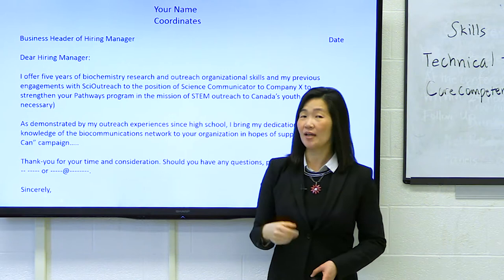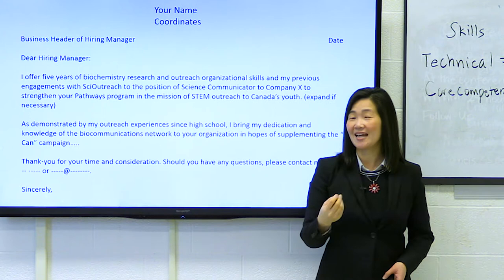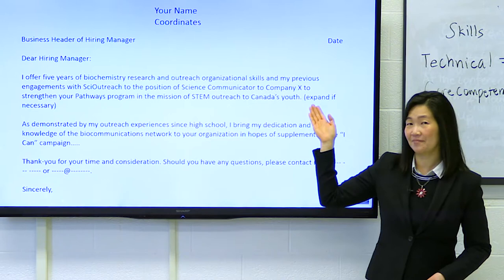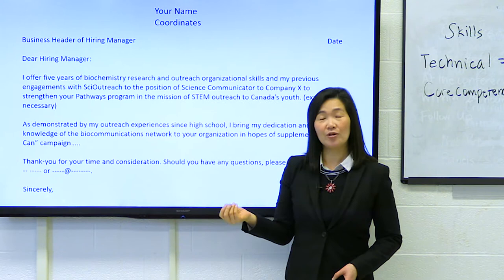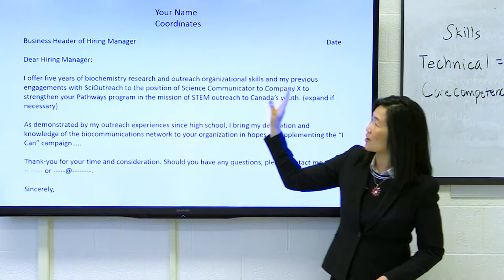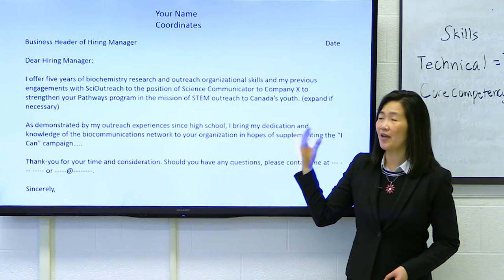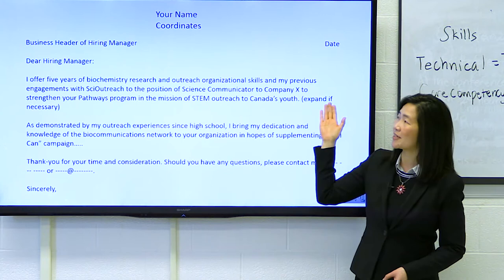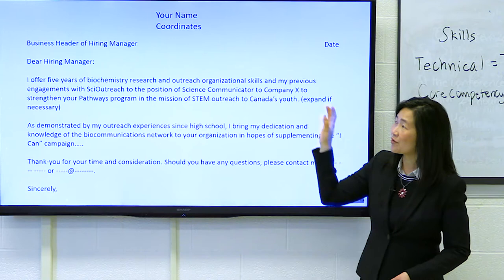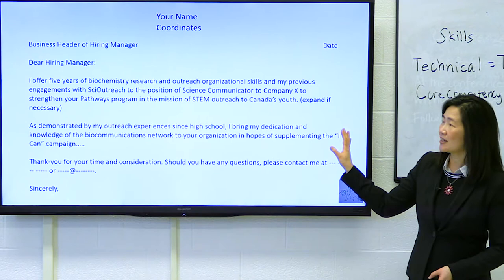Here's an example: 'I offer five years of biochemistry research' — so that's the PhD research — 'and outreach organizational skills and my previous engagements with SCI Reach, SCI Outreach, to the position of science communicator at Company X.' So already right away, the reader knows, this is what they can bring, this is how they can help us. 'To strengthen your Pathways Program in the mission of STEM outreach to Canada's youth.' This part you are getting from the website, from any detailed information they have on their mission, their values, what they're headed towards. The first paragraph is all about right away how you can help their team grow and strengthen.